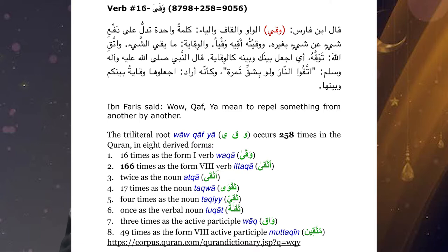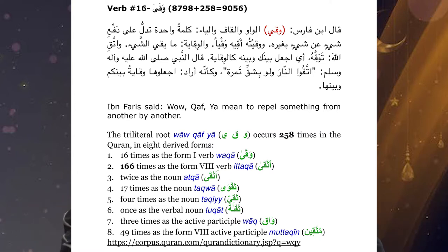وَاتَّقِ اللَّهِ تَوَقَّهُ أَيْ إِجْعَلْ بَيْنَكَ وَبَيْنَهُ كَالْوِقَايَةِ — and this is especially important for us to understand. When we hear throughout the Quran اتَّقِ اللَّهِ, it is used as though we are threatening somebody, typically when someone is doing something wrong or displeasing. We say to them اتَّقِ اللَّهِ and we think it means 'fear Allah' — that is the basic translation commonly given.